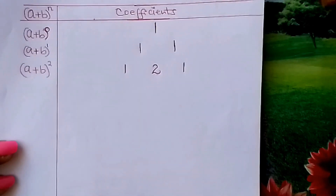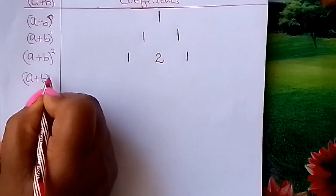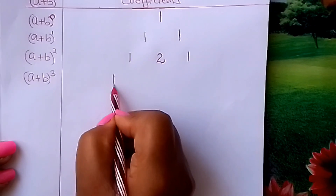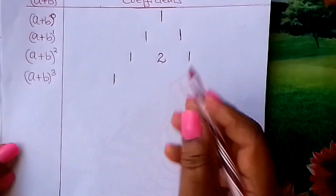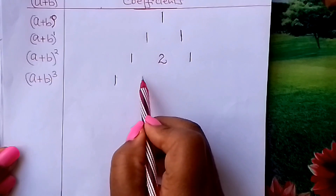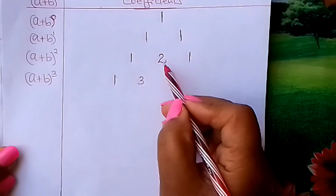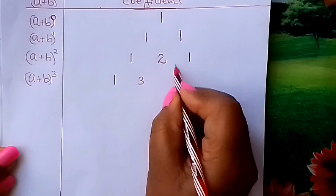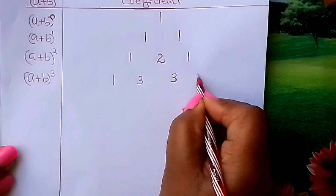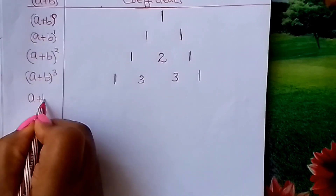We come to (a + b) raised to 3. You come and fix a 1. Look at the slanting side here. Then you add these 2: 1 plus 2 gives us 3 — fix it down here at the middle. Again, 2 plus 1 gives you 3 — fix it in between the 2 down here. Finally, fix your 1 in a slanting pattern.